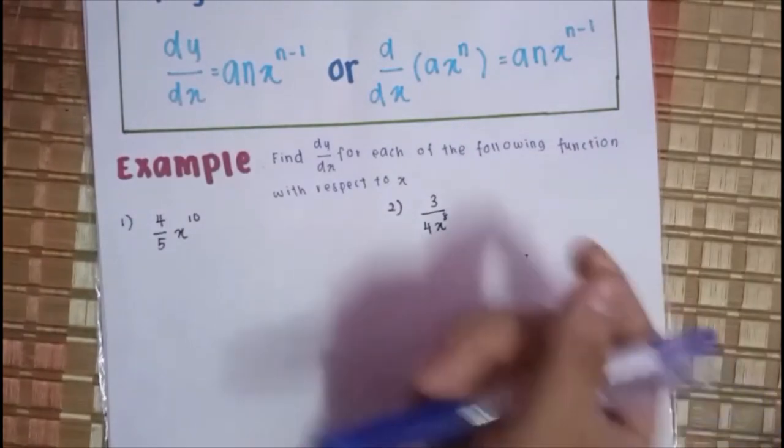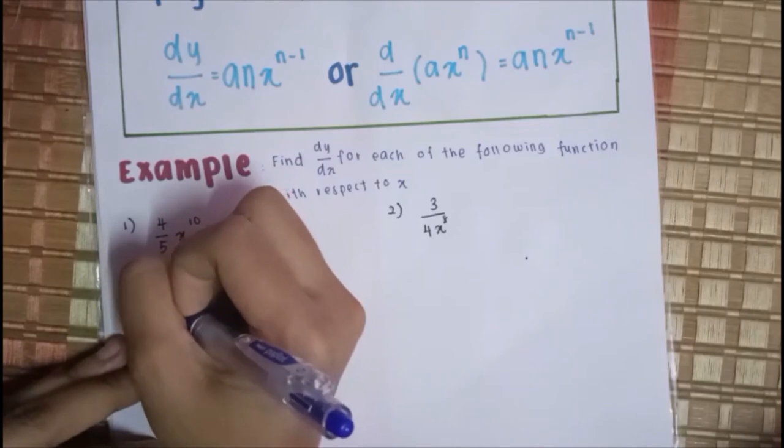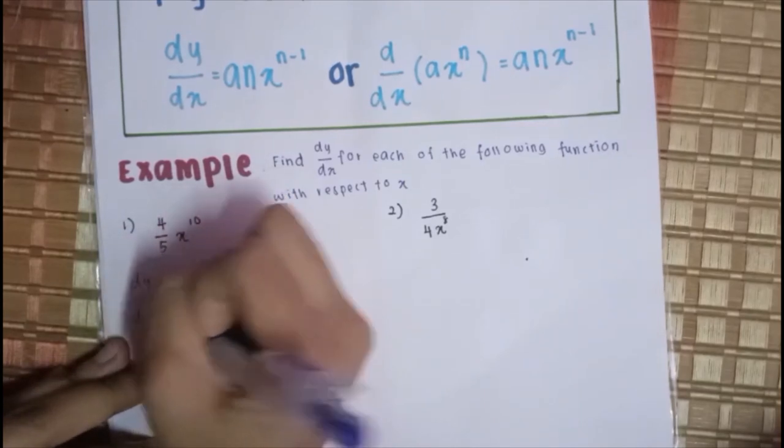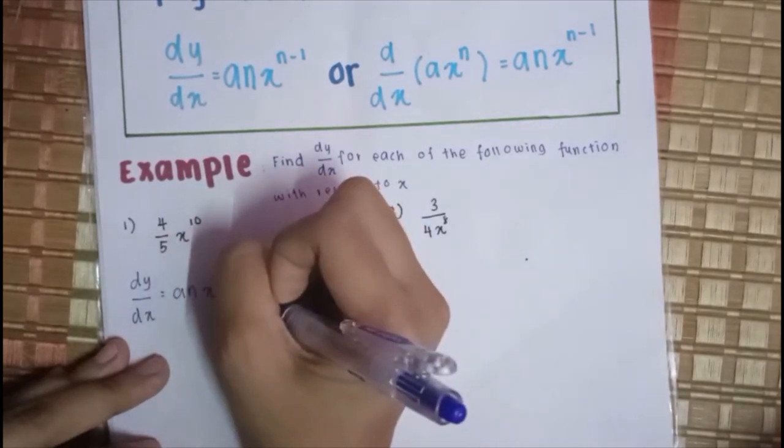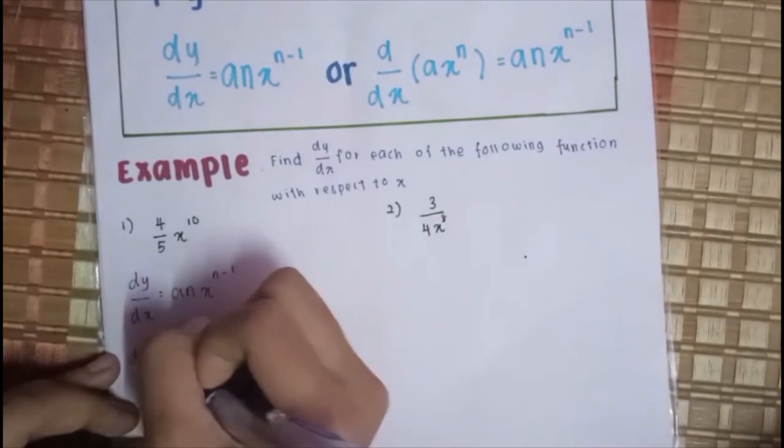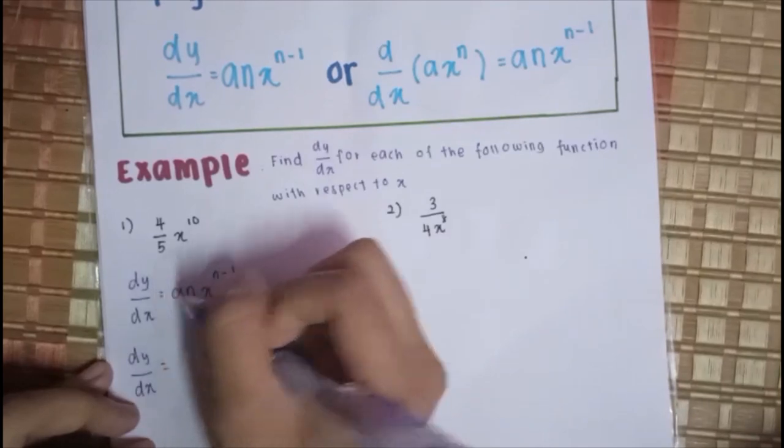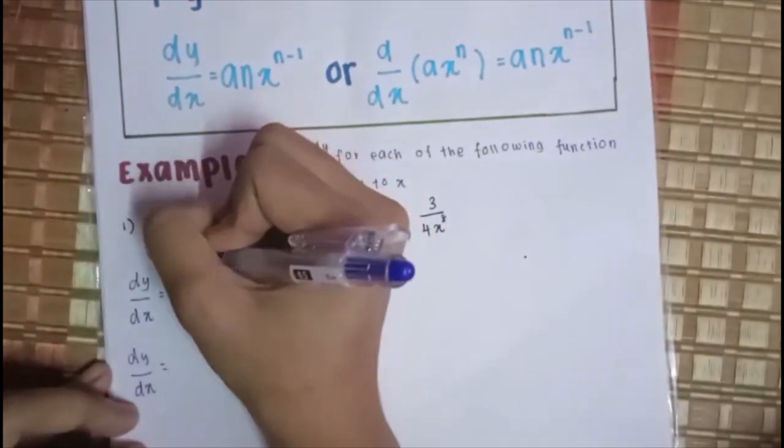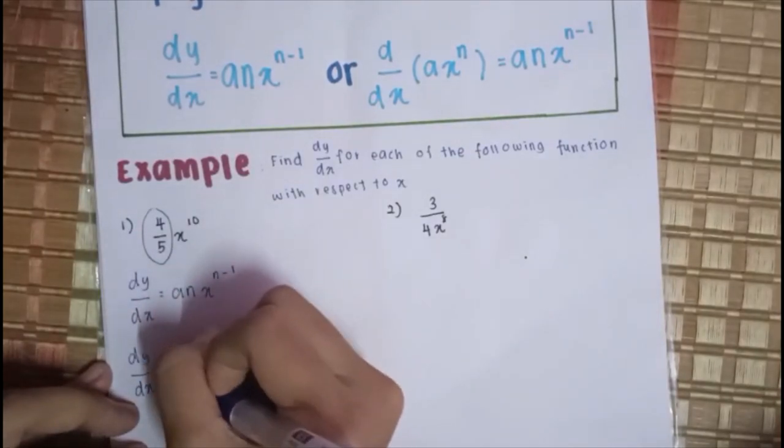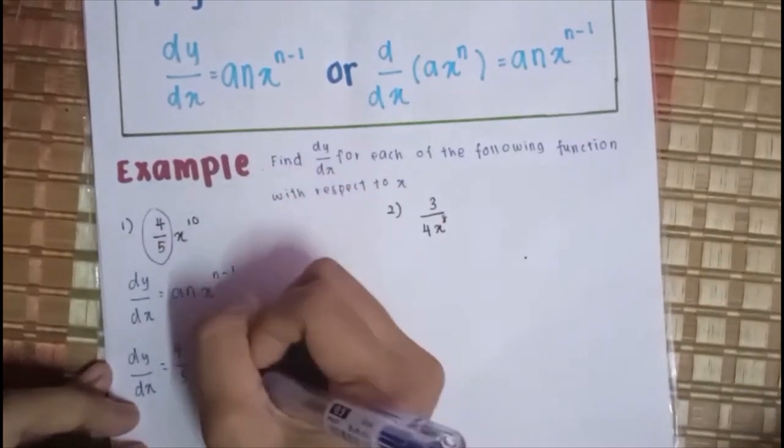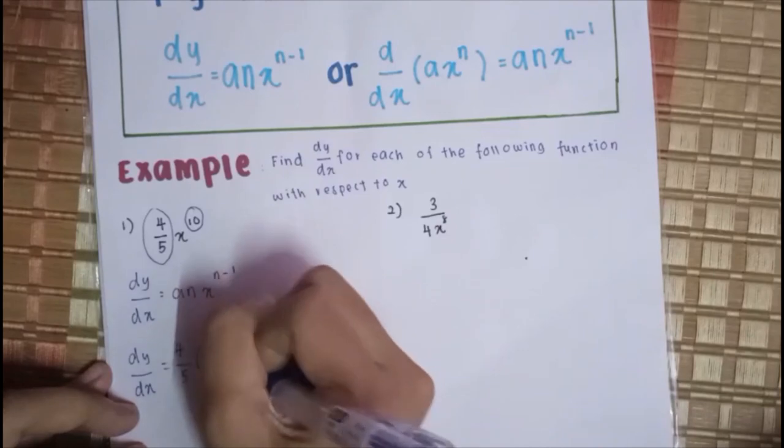Mula-mula kita kena tulis formula dia dulu. Formula dia kan DY per DX sama dengan ANX N tolak 1. DY per DX sama dengan A kan sebagai pemala. Pemala kita apa? 4 per 5. Sini 4 per 5. N kita adalah integer. Masukkan integer. Integer kita adalah 10, 10X.